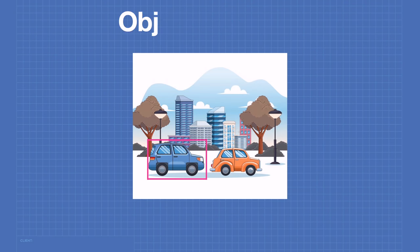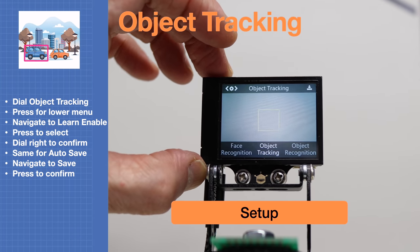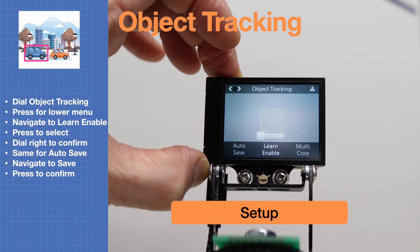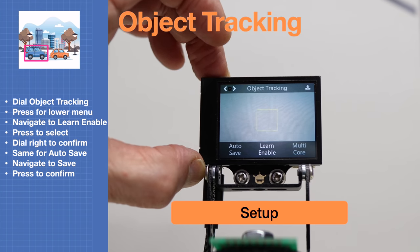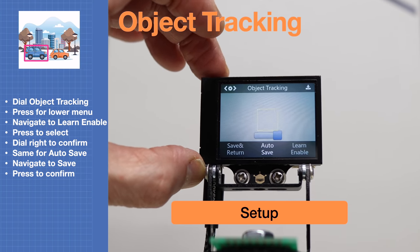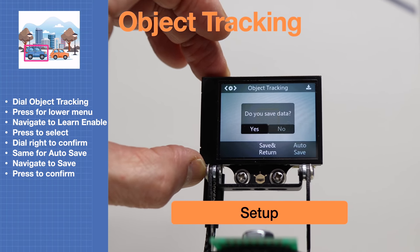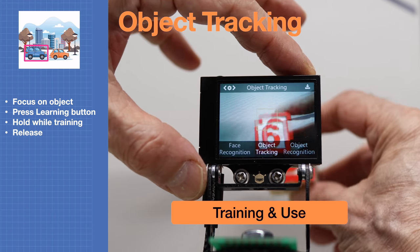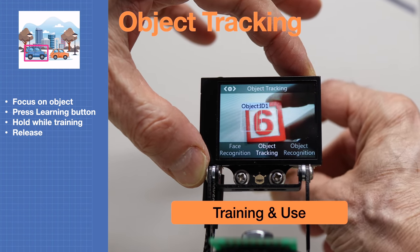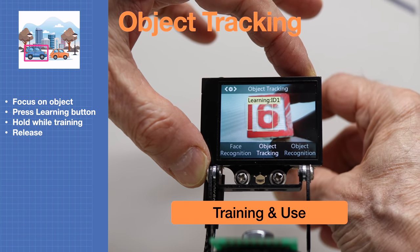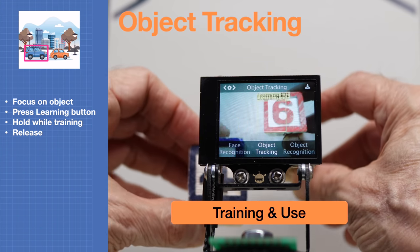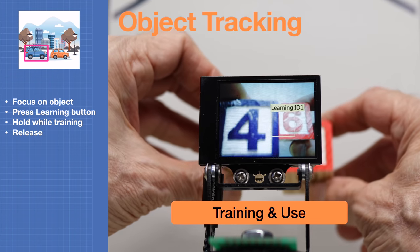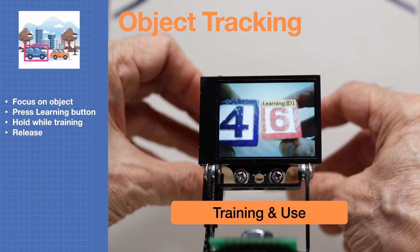In object tracking mode, dial object tracking on the top screen, press the dial down, and navigate to 'learn enable.' Set the toggle switch, then go to 'auto save' and do the same. Navigate to 'save and return' and confirm. Place the object in the focus area and hold down the learning key, continuing to hold while looking at different angles. Once you let go it will still be learning the object in memory, continuously improving its performance.